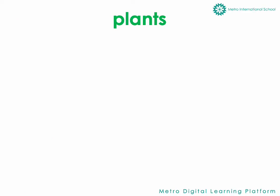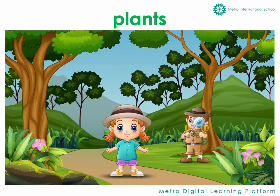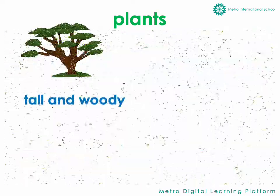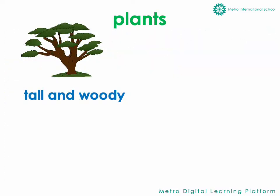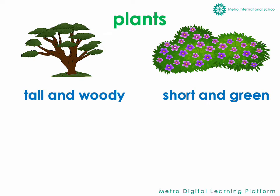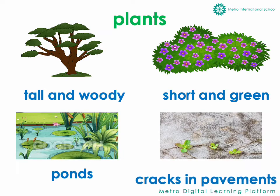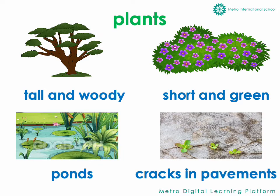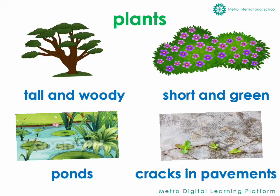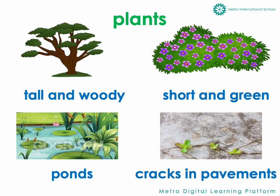Look around you and you will find many kinds of plants. Tall and woody plants, short and green plants. Some plants grow in ponds, some grow through little cracks in pavements. No matter what they look like or where they live, plants are similar in many ways.